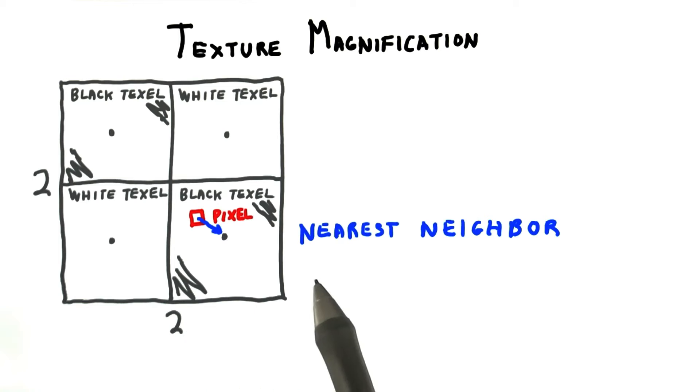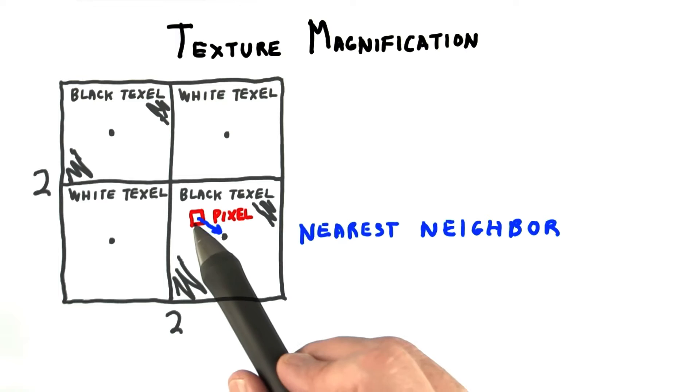Sampling the texture in this way is called nearest neighbor. Whatever texel center is closest to the pixel center is the color the pixel gets.